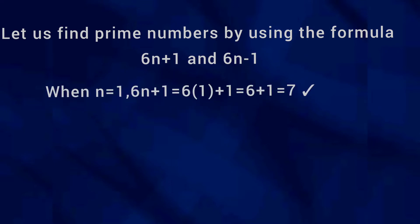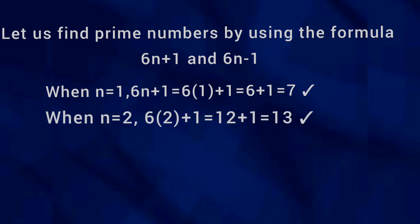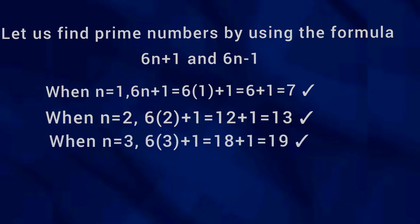Let us try for 6n + 1. When n = 1, 6n + 1 = 6 × 1 + 1 = 7, and 7 is a prime number. When n = 3, 6n + 1 = 6 × 3 + 1 = 19, and 19 is a prime number.